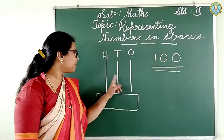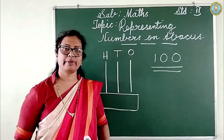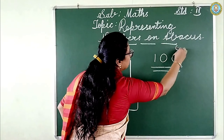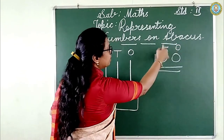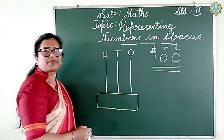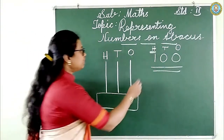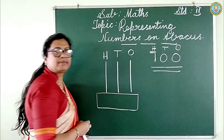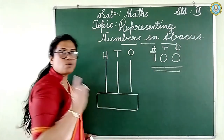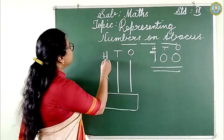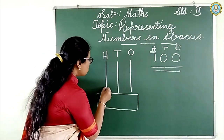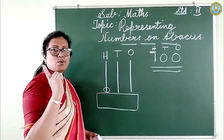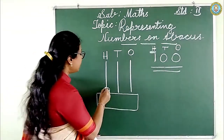We use three spikes for a three digit number. From the right: first place is ones, second is tens, third is hundreds. In the hundreds place we see the digit one, so we put only one bead in the hundreds spike.